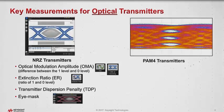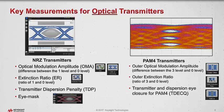On the PAM4 side of things, we've got very similar measurements. There's one called the outer OMA, which is the difference between the three level and the zero level. Looking at that PAM4 signal on the top right, the bottom level is zero and then it goes to one, two, and three — so the outer OMA is looking at the bottom and top rail. The outer extinction ratio is the ratio of those two levels.